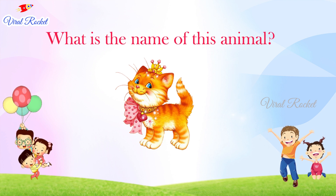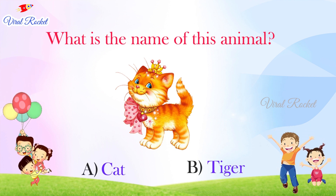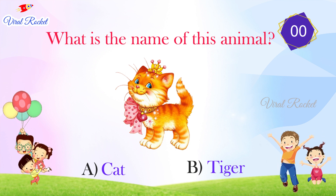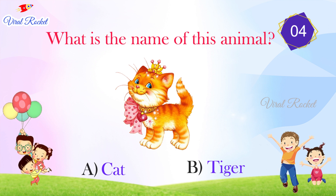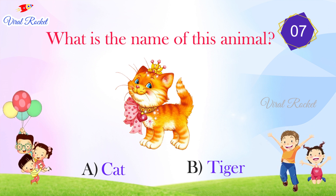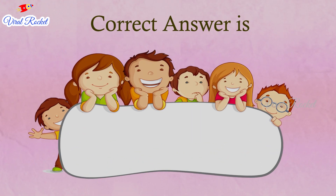What is the name of this animal? The options are: A. Cat, B. Tiger. The correct answer is A. Cat.